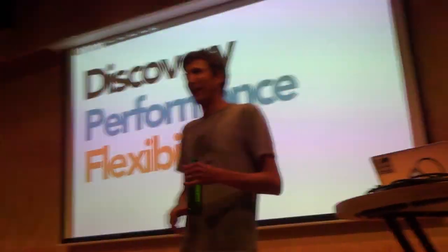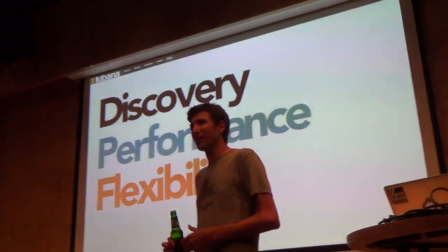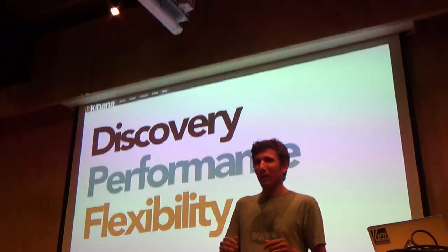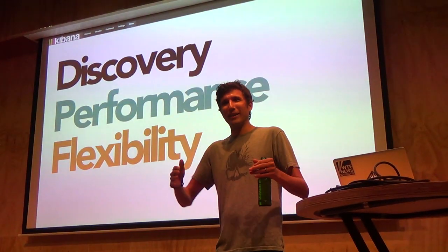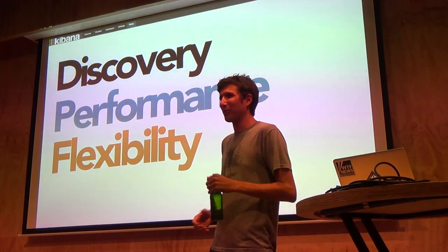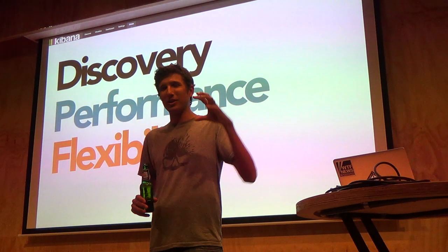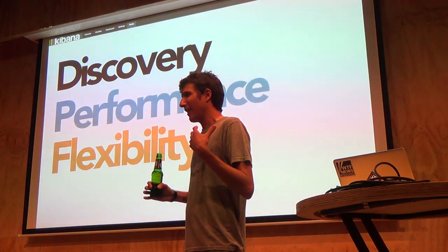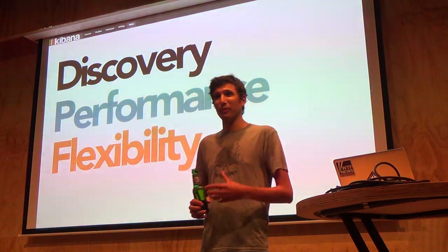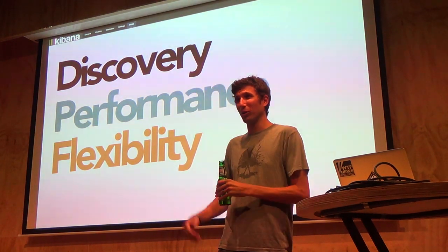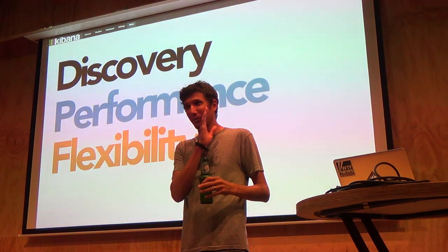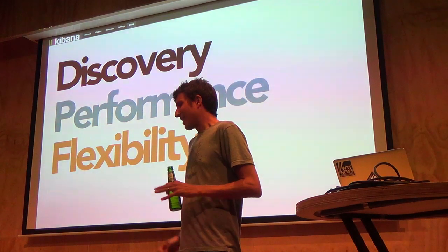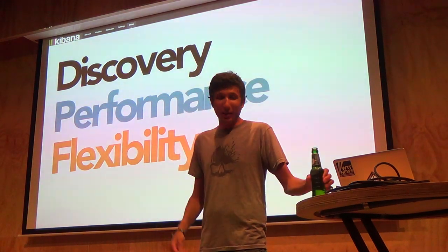Version 3 was kind of a collection of panels that were parameterized — you could fill in the fields and check boxes. But every panel in version 3 did one thing, and they were very closely tied to Elasticsearch facets, which were not exceptionally flexible. They were really powerful and really useful, and for a while they were faster than aggregations, which isn't really true anymore, but they were great at the time.